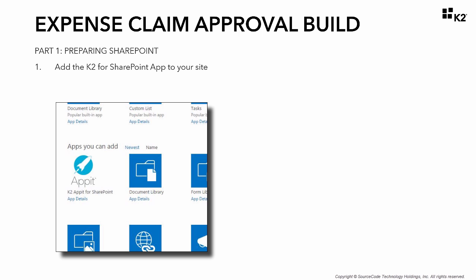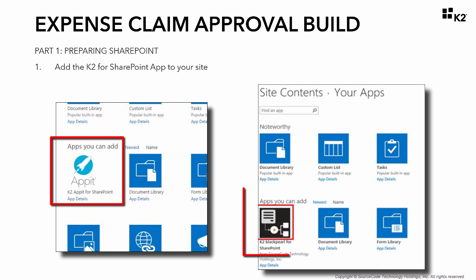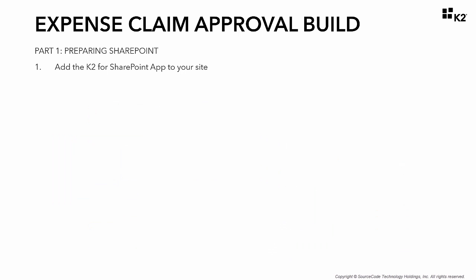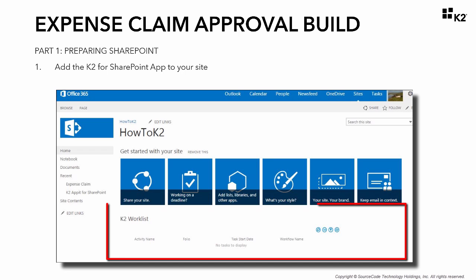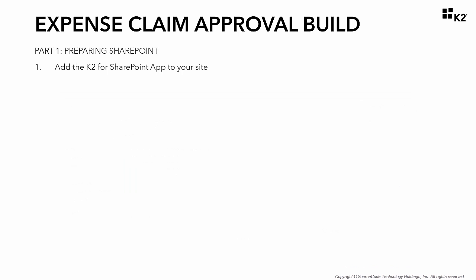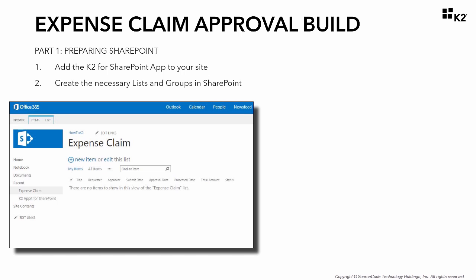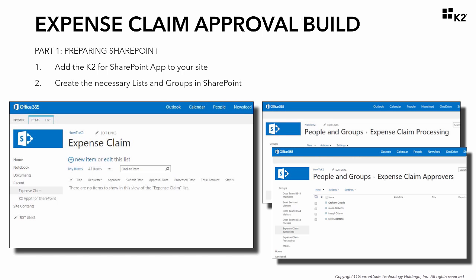In part one of this tutorial, we will walk through two steps to prepare our SharePoint site for creation of a K2 application. In step one, we will add the K2 AppIt app or K2 Black Pearl for SharePoint app, depending on your environment, to our SharePoint site and configure it, as well as add a K2 Worklist app part to our site's landing page.